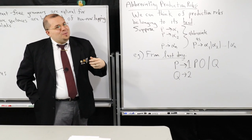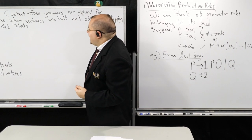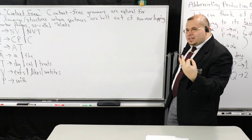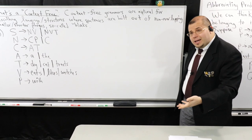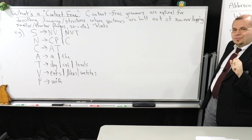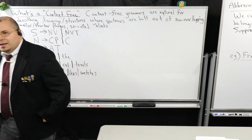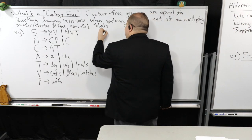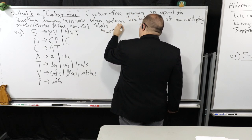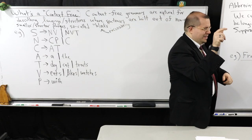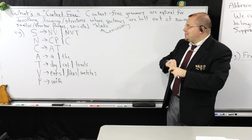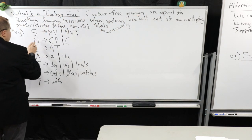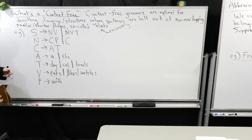I want to give you a simple example of what 'context-free' actually means. Context-free languages — whether in formal languages or linguistics — are very natural for describing structures where sentences are built out of non-overlapping, smaller pieces. One thing I want to stress is that these pieces are recursively put together. Here is an example of a slightly more complicated context-free grammar, using the convention I just described.